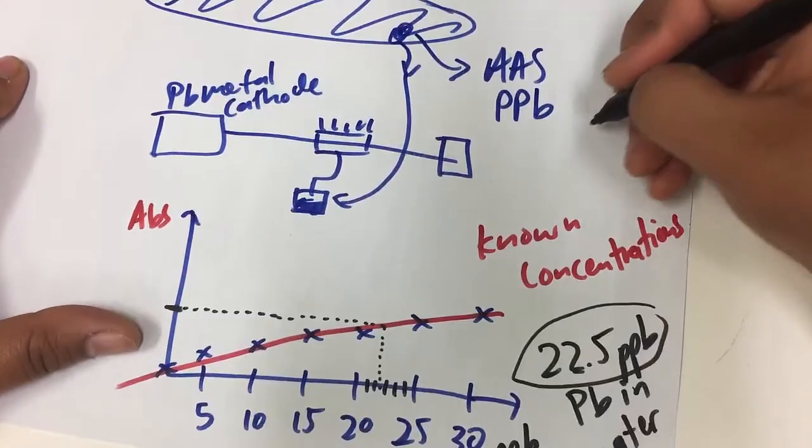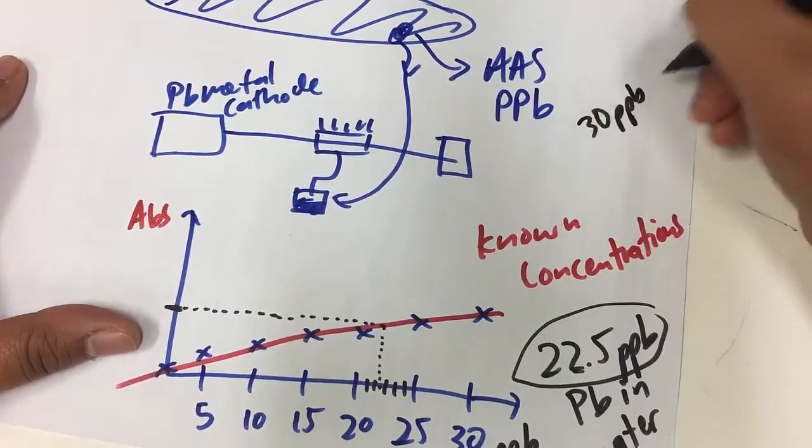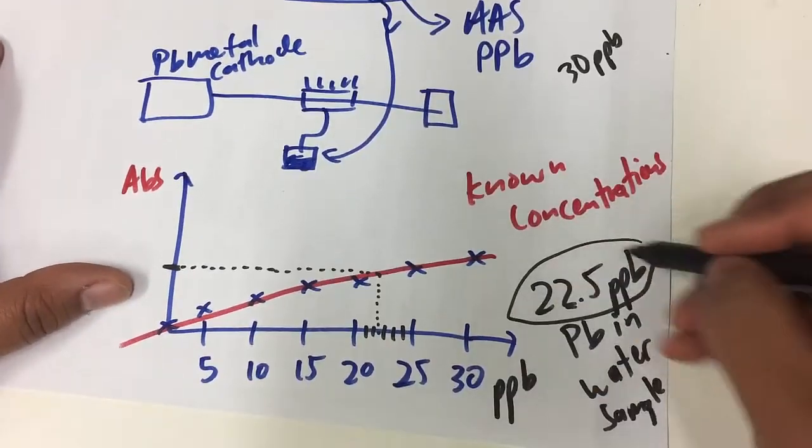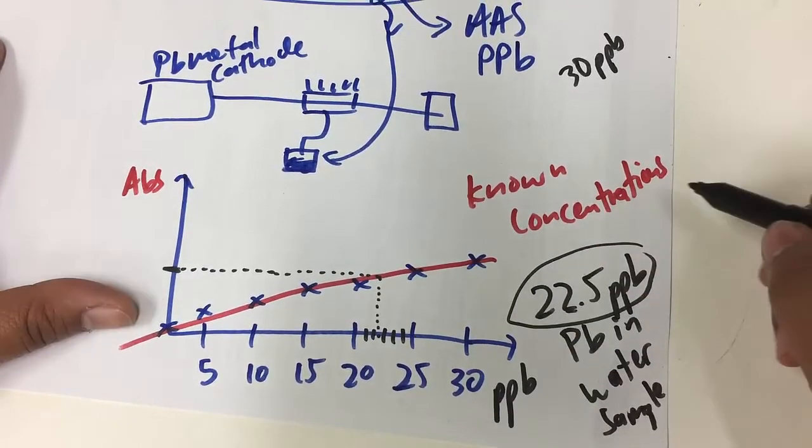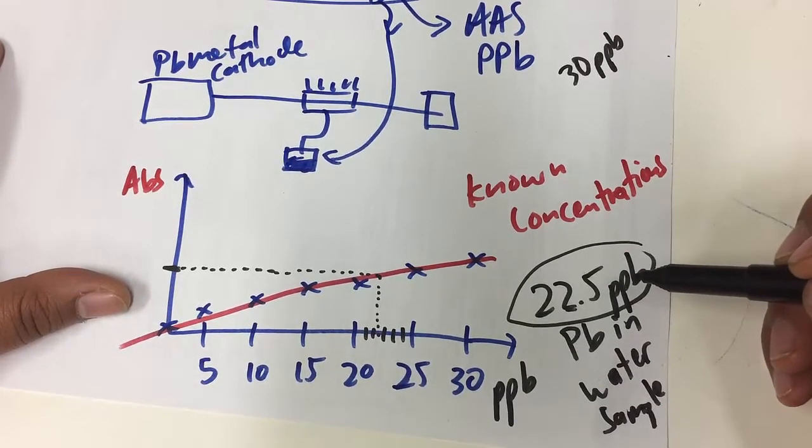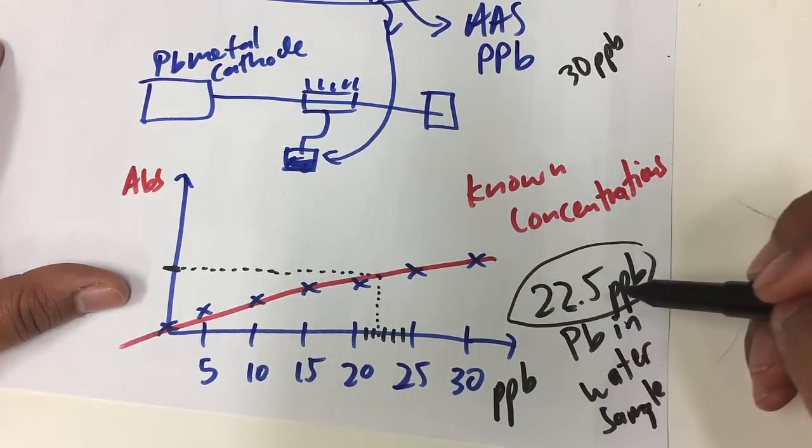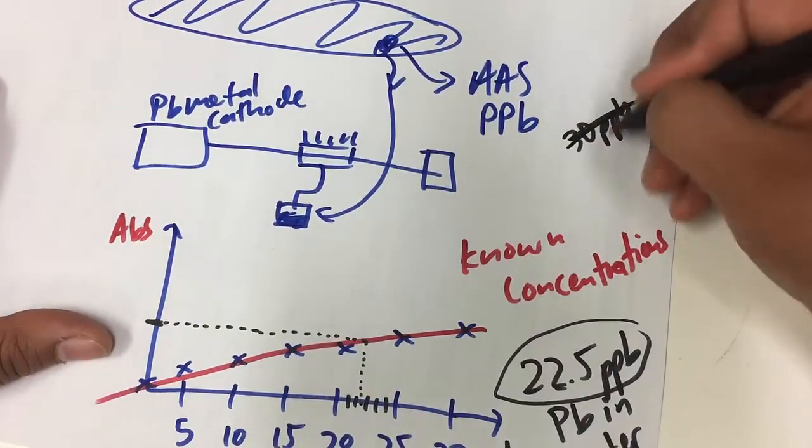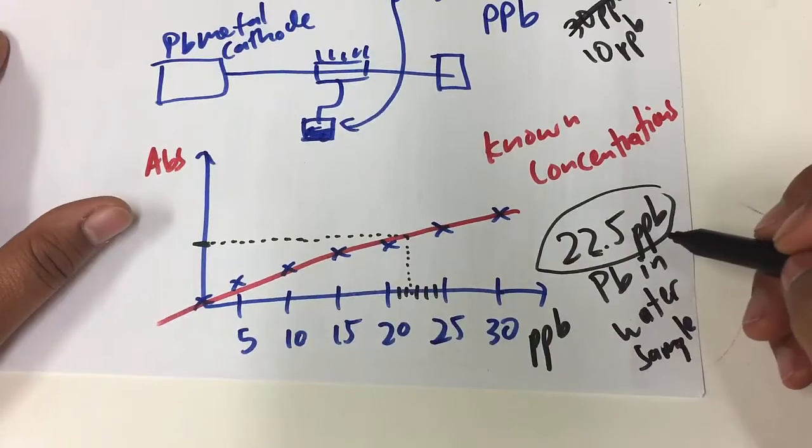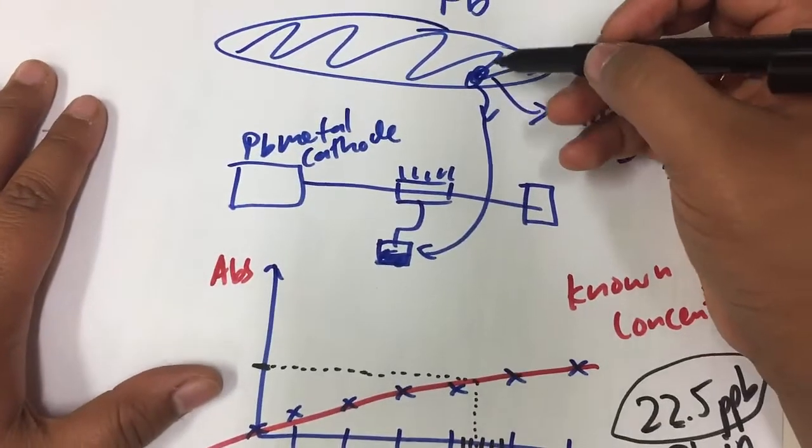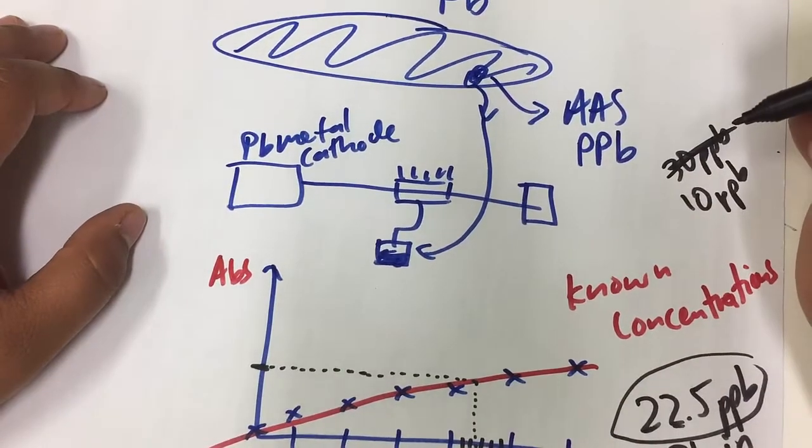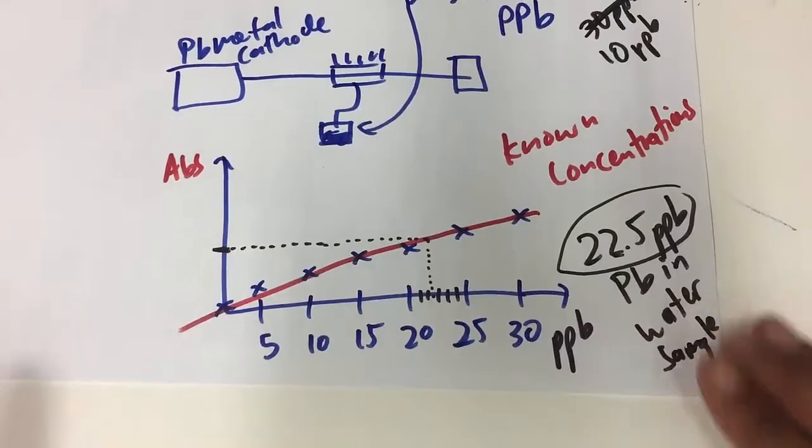Now, the question might be that there are safe percentage of... Oh, sorry, a safe concentration of lead in water. Is this a safe concentration? It just depends on what that concentration is. So, for example, if we said that 30 PPB was to be considered the safe level and we tested a water sample and got 22.5 PPB, then you can say that, yes, that is within the safe levels of lead in water. However, if it was actually that it was 10 PPB was the safe levels and we got 22.5, we could say that, okay, that water sample does not contain the safe levels. Possibly some sort of contamination has happened.